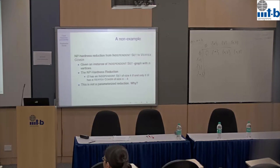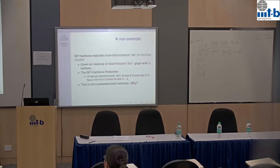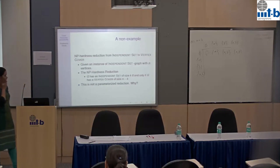What about a reduction from independent set to clique? The NP-hardness reduction says: G has an independent set of size k if and only if the complement graph G-complement has a clique of size k. The parameter is k on both sides, so this is an FPT reduction. Given that independent set is W-hard, this shows that clique is also W-hard.